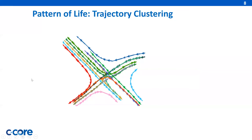The trajectory clustering results are shown in this figure. Different clusters and normal patterns of life are represented by different colors, where an arrow shows the direction. The clustering was performed with the DBSCAN method. It divides each trajectory into segments of equal size, and then each segment is used to calculate the distance between each point.